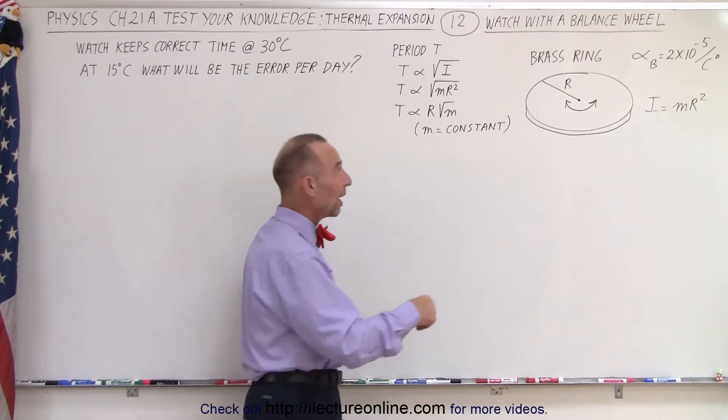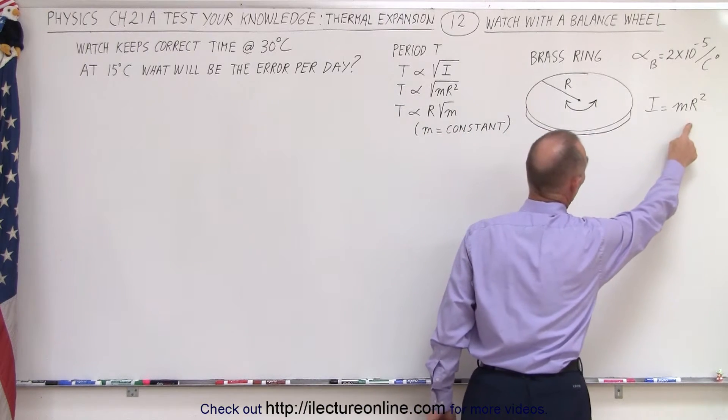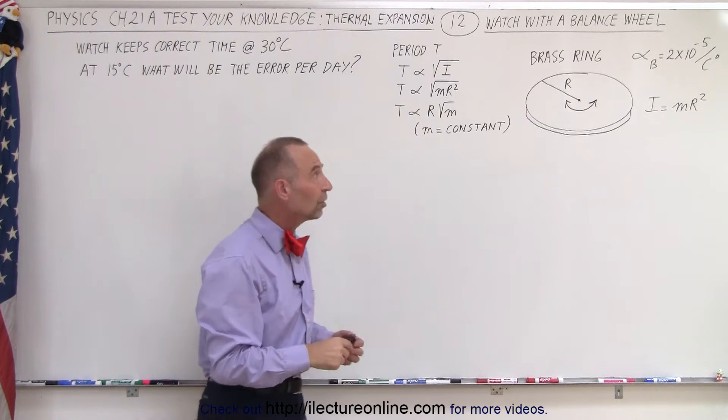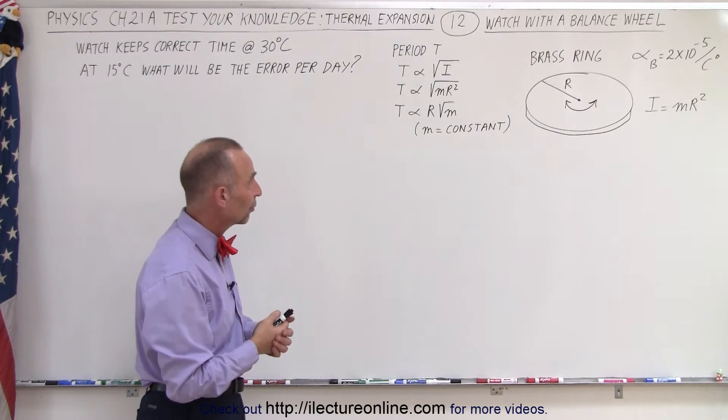So let's say we have a brass ring like that that has a moment of inertia MR². And let's say that the coefficient of linear expansion is 2×10⁻⁵ per degree centigrade.